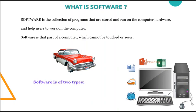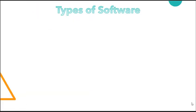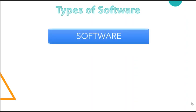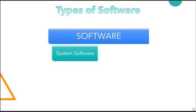On the basis of this, we can divide software into two types: system software and application software. A computer software performs two distinctive tasks. The first task is to control and coordinate the hardware components, and the second is to enable the user to accomplish their required task. The software used to achieve the first task — to control and manage the hardware — is known as system software. The software used to achieve the second task — to enable users to accomplish their required task — is known as application software.